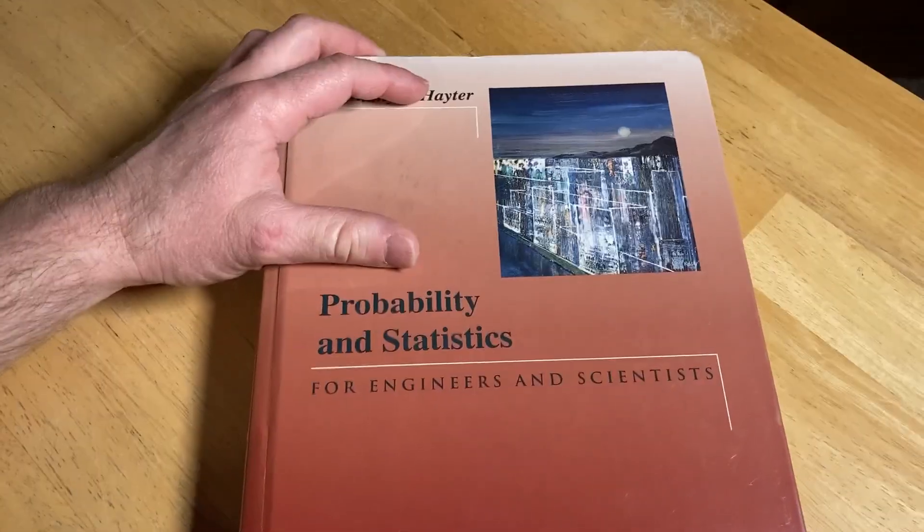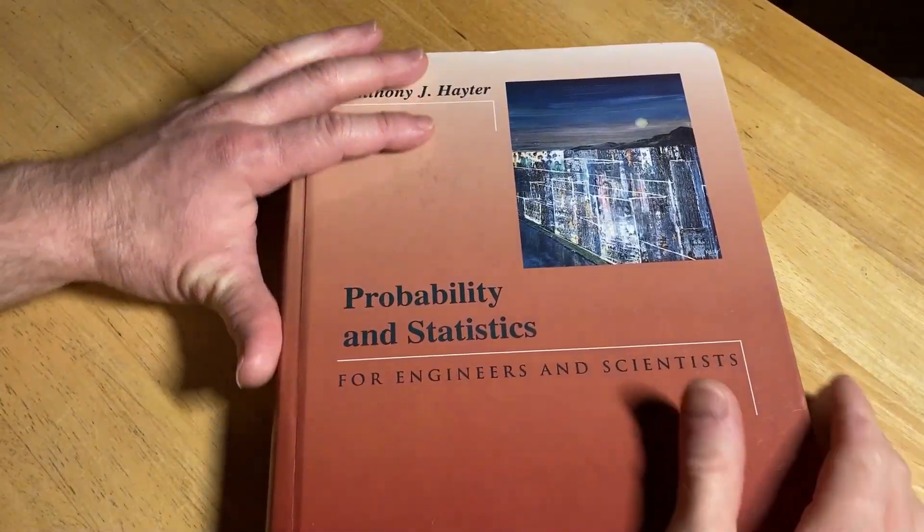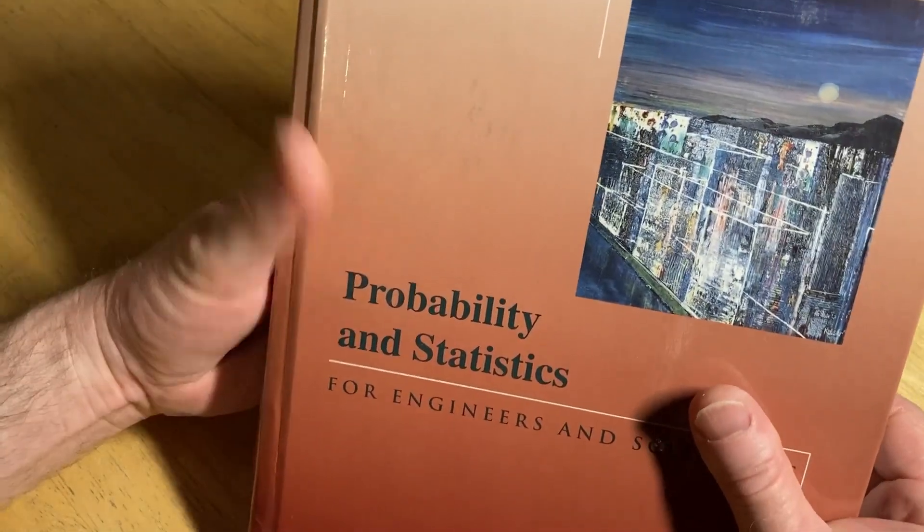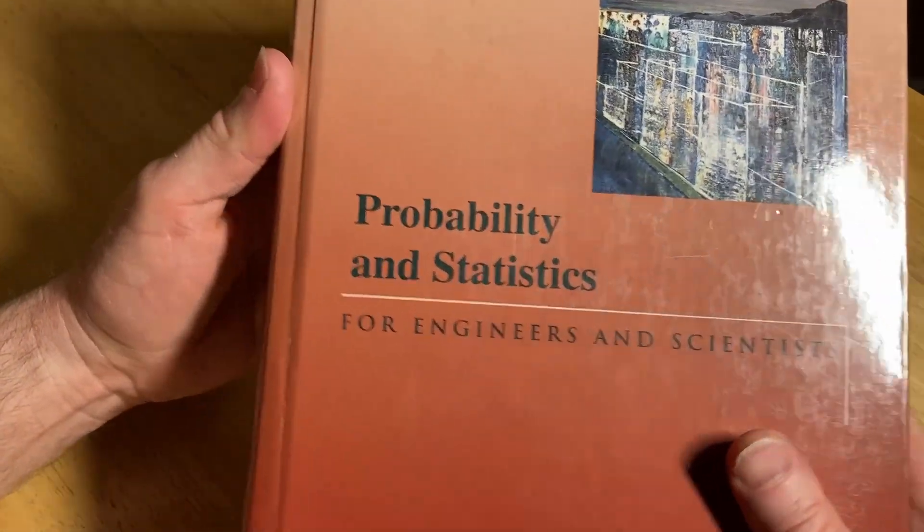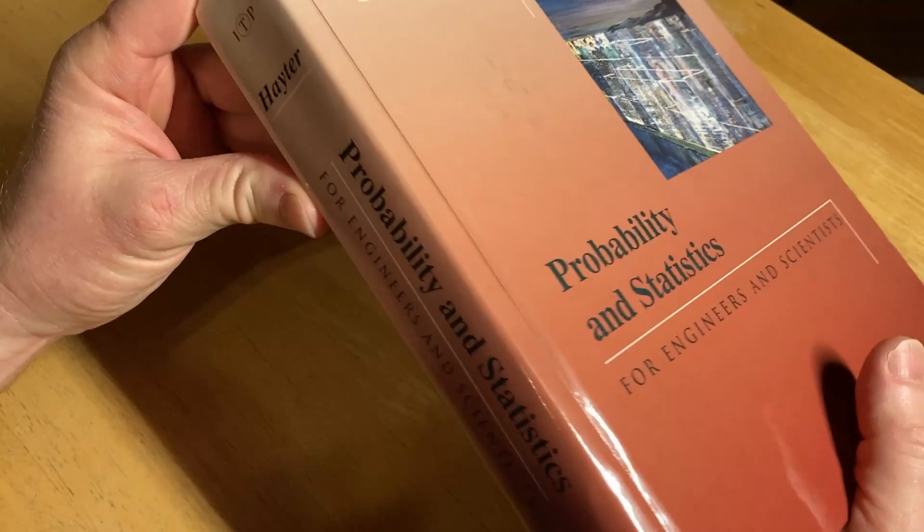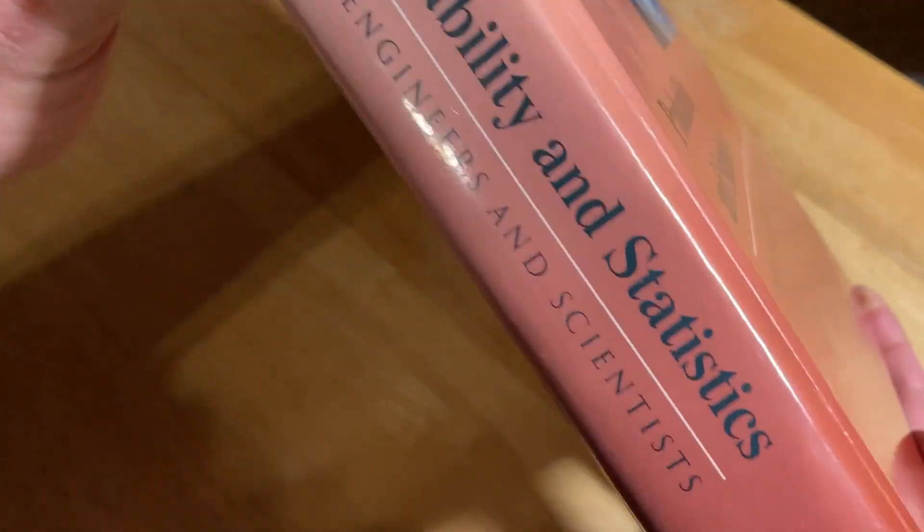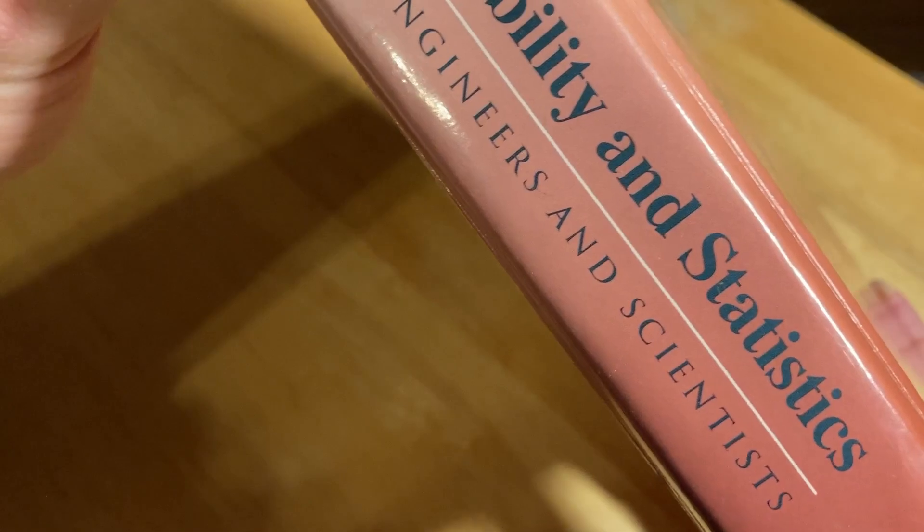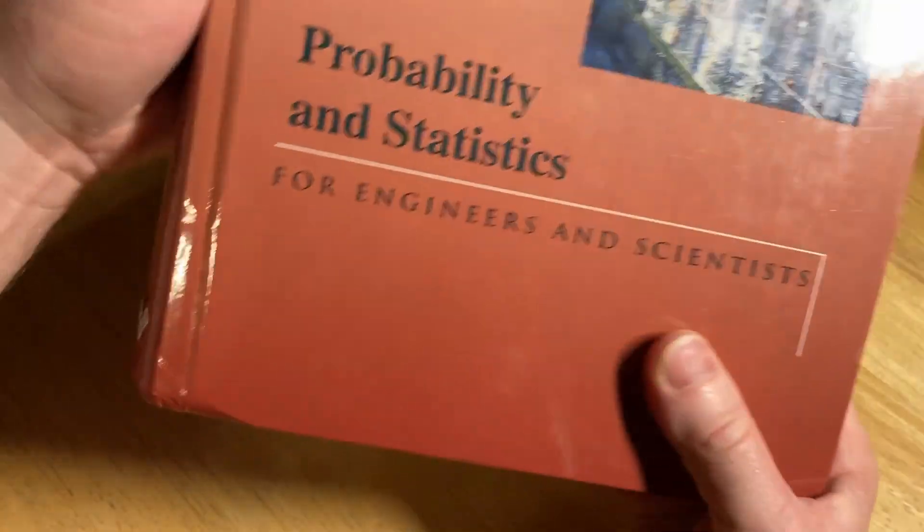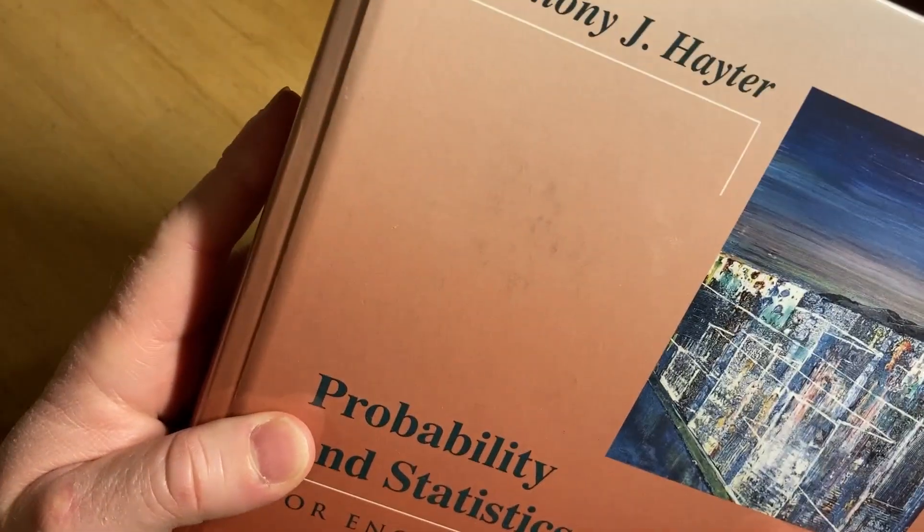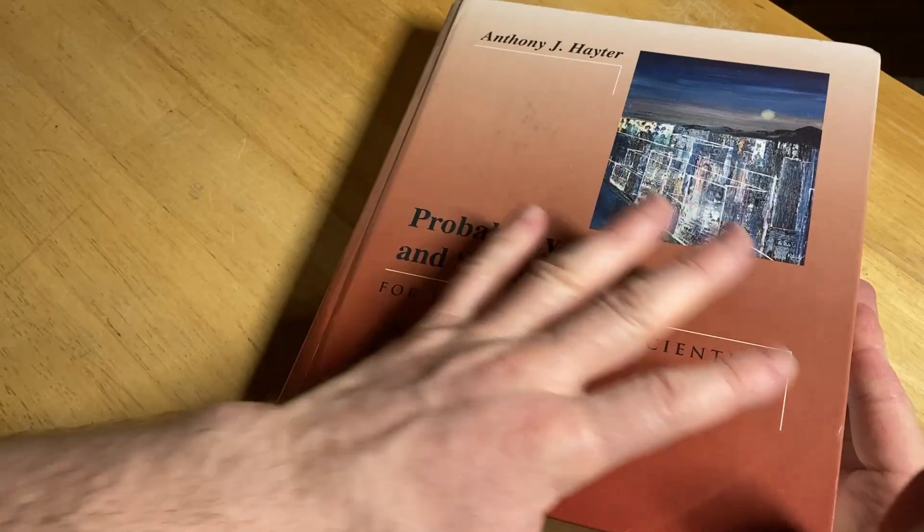A lot of the stuff does require calculus, but you can learn some of it without calculus. If you know calculus, that makes it even cooler because you can use calculus for some of the stuff in this book. Probability and Statistics for Engineers and Scientists by Anthony J. Hayter. Let's take a look at this book.